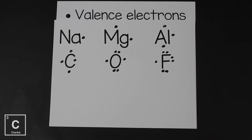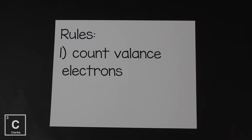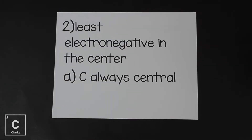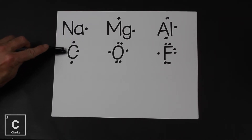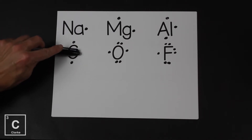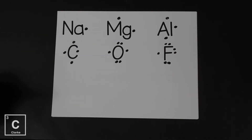Now that we remember how to do Lewis dot structures, let's keep going with covalent bond formations. We need a couple of rules. The first rule is to count all of the valence electrons — all of the elements that are trying to bond together. The second rule: the least electronegative, meaning the one farthest away from fluorine, is in the center. If carbon is available, it is always the central element, because carbon has four valence electrons and can make four bonds all the way around it. Always central when available.